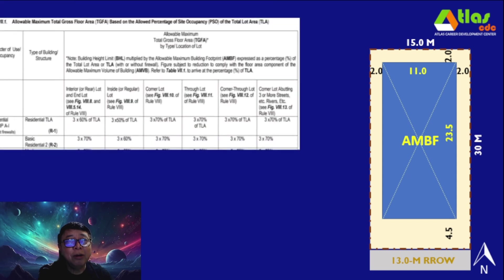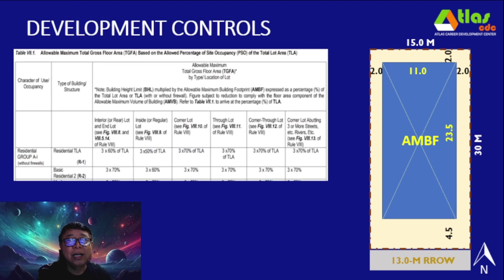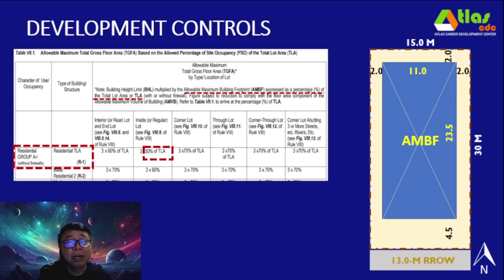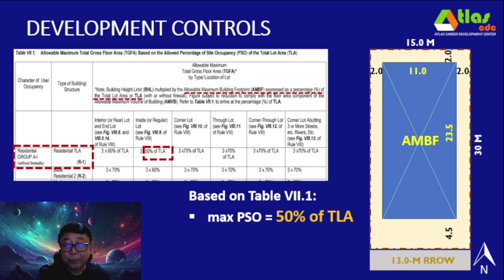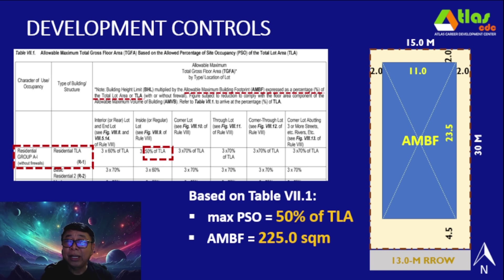There is also another provision in Rules 7 and 8 — Table 7.1 — where the AMBF is expressed as a percentage of the total lot area. For R1, without firewall in an inside lot, the AMBF is equivalent to 50% of the TLA. So our maximum PSO is 50%, and the AMBF is 50% of 450 square meters, giving you 225 square meters.